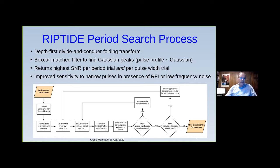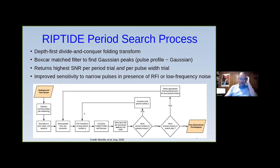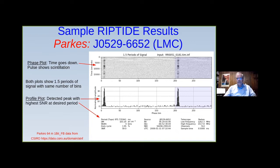The improved sensitivity over Presto is especially for narrow pulses in the presence of RFI or low-frequency noise. That got my attention because at Haswell, although we're in a very remote location with not much RFI, we do have our share of red noise — some low-frequency harmonic noise that makes it harder to find weak pulsars. I was looking at Parkes survey data for pulsars in the Large and Small Magellanic Clouds.